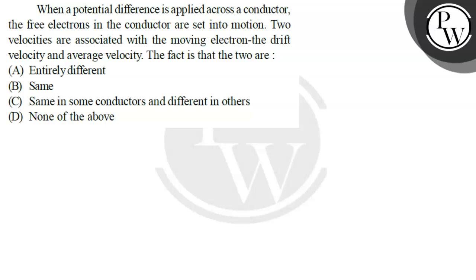Hello. Let's read the question. The question says: when a potential difference is applied across a conductor, the free electrons in the conductor are set in motion. Two velocities are associated with the moving electron — the drift velocity and average velocity.